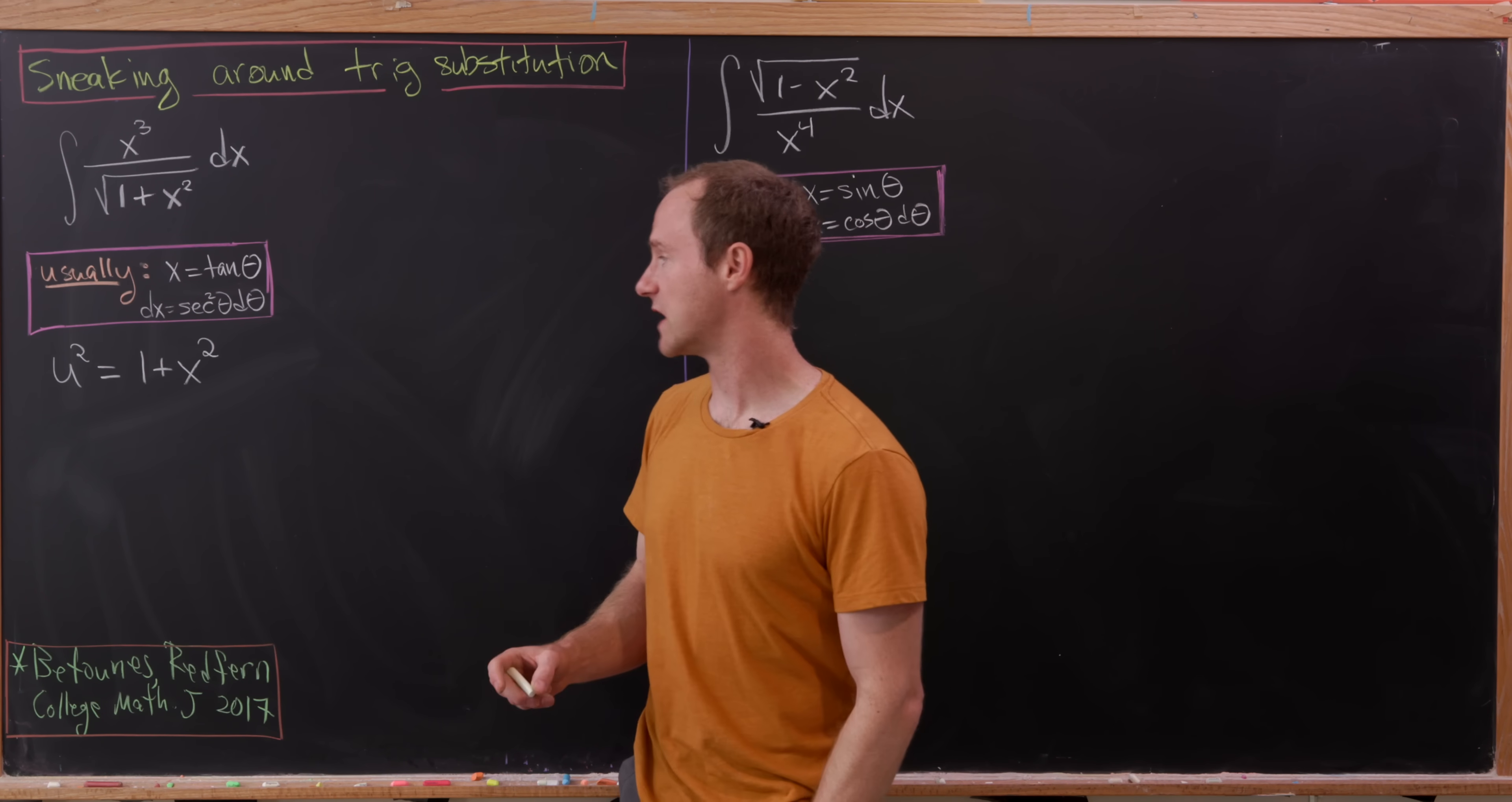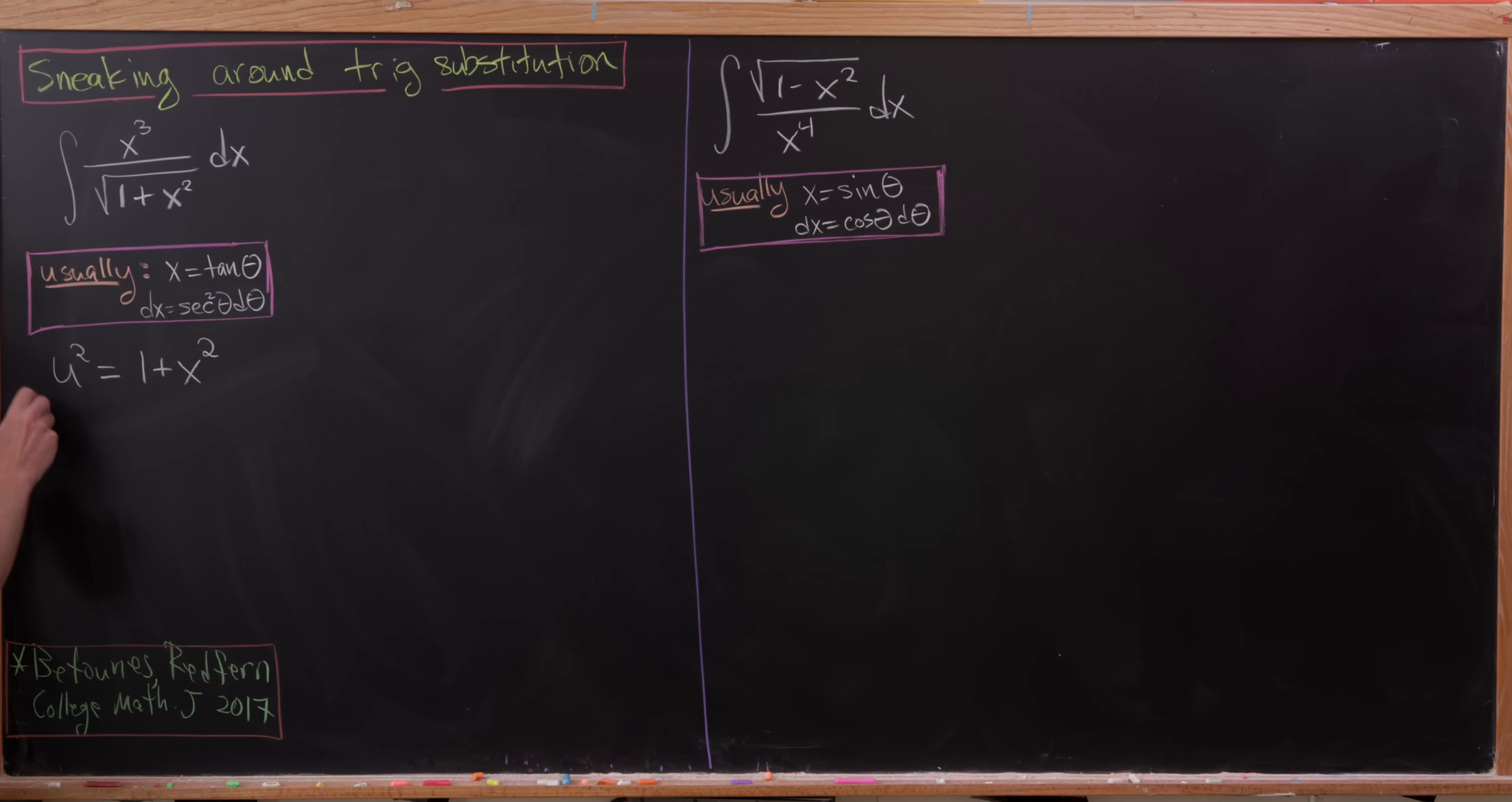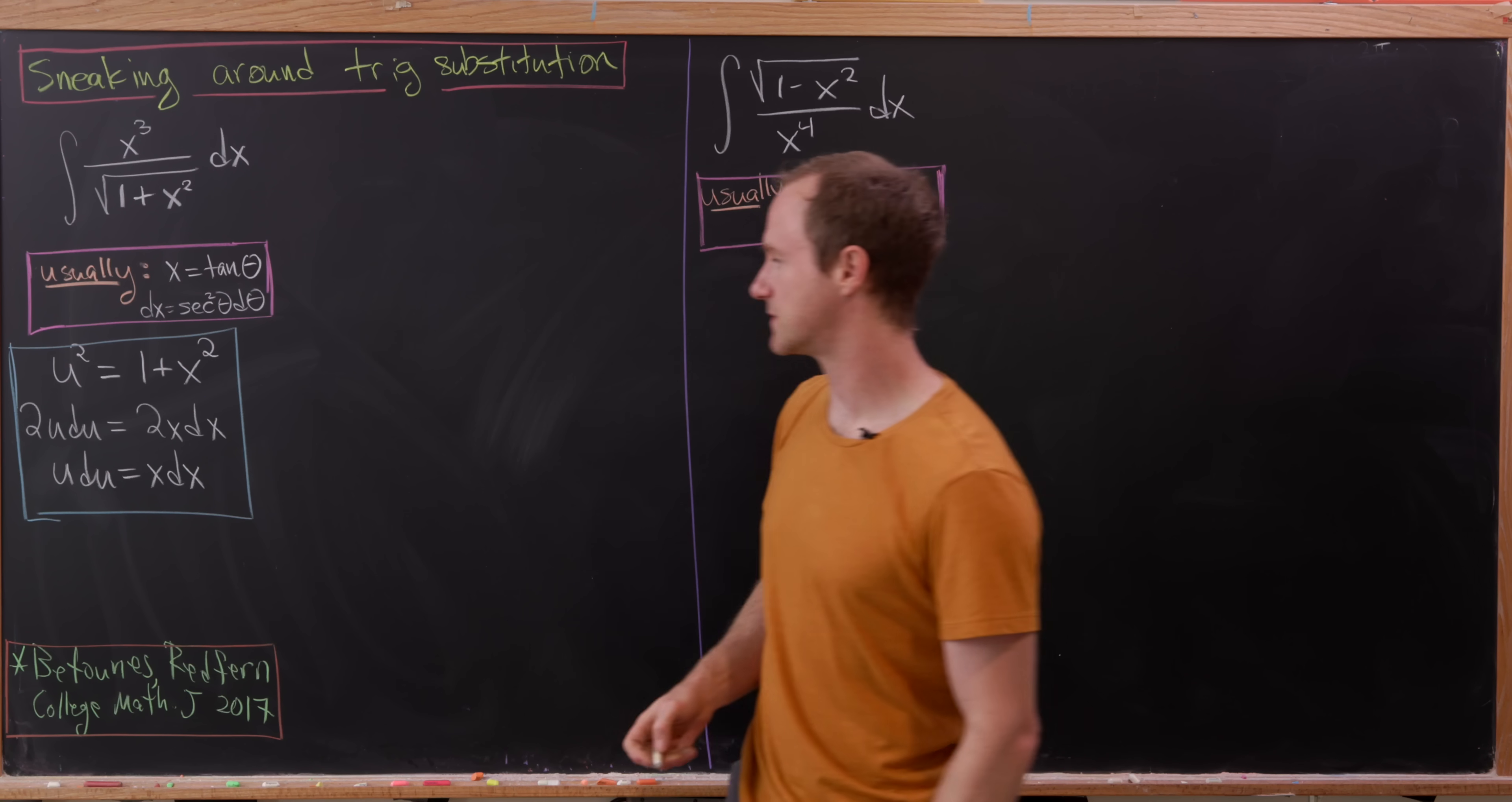Okay. So anyway, we've got u squared is 1 plus x squared. Observe that differentiating, we get 2u du is the same thing as 2x dx, meaning that u du will be the same thing as x dx. Okay. But then, what are we going to do with that? Well, let's see if we can partition our integrand into parts that can be easily substituted for.